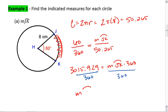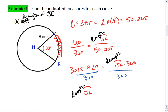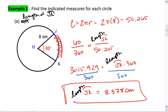I then find that the measure of arc JK. In this one, we're actually looking for the length of JK. The length of JK is going to be 3015.929 divided by 360. I get a length of approximately 8.378 centimeters. That is the length of this arc JK.